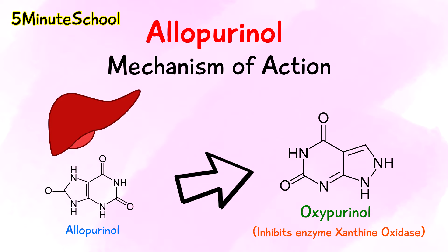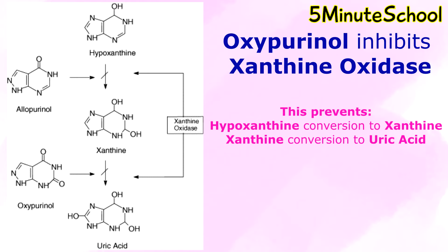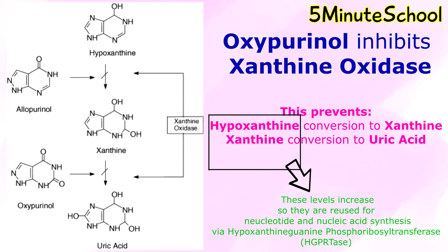Once allopurinol is ingested and metabolized into its active form oxypurinol, it inhibits the enzyme which converts hypoxanthine to xanthine and xanthine to uric acid. It also increases the reutilization of hypoxanthine and xanthine towards nucleotide and nucleic acid synthesis via a process involving hypoxanthine-guanine-phosphoribosyltransferase, abbreviated as HGPRTase.